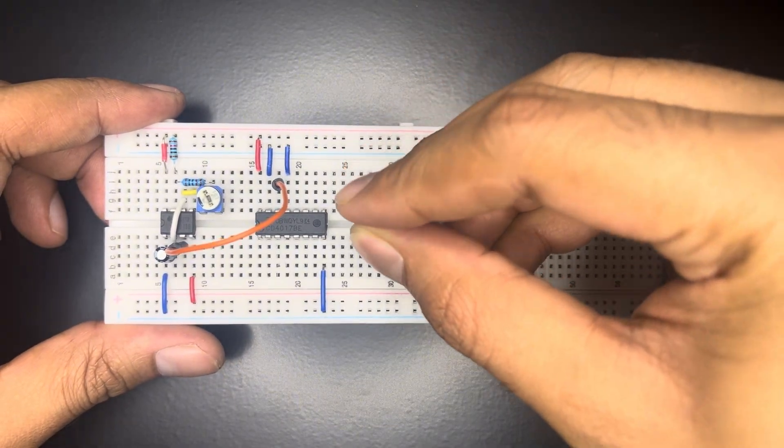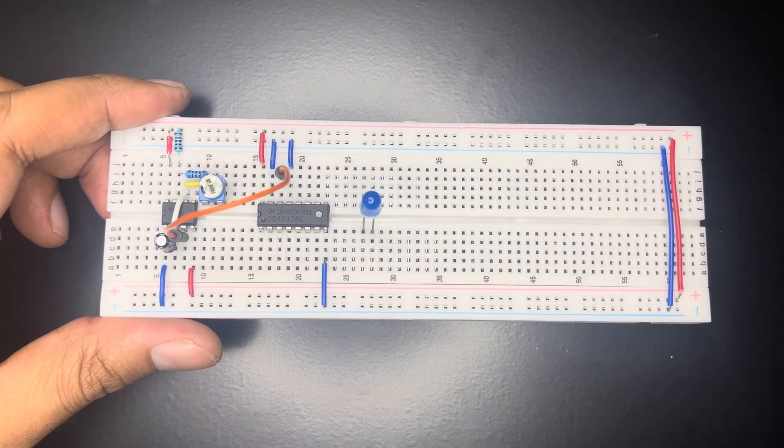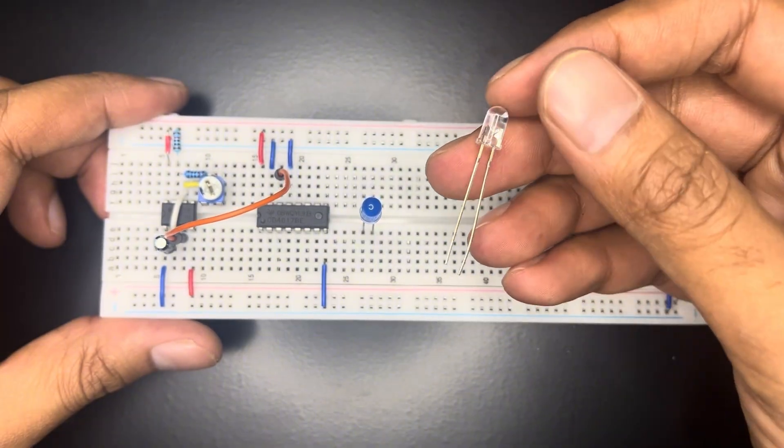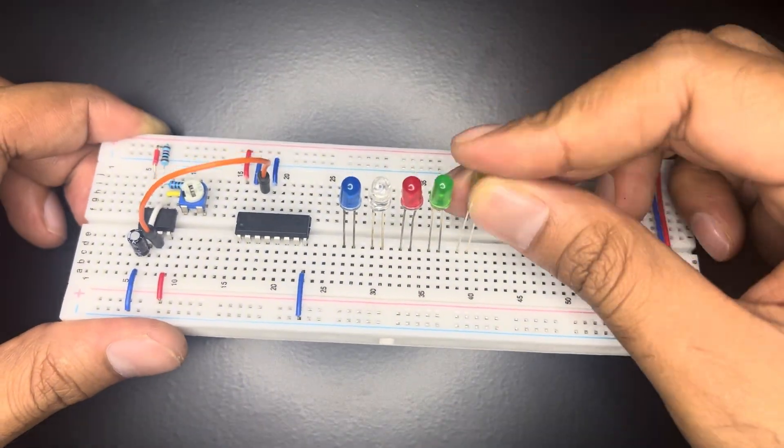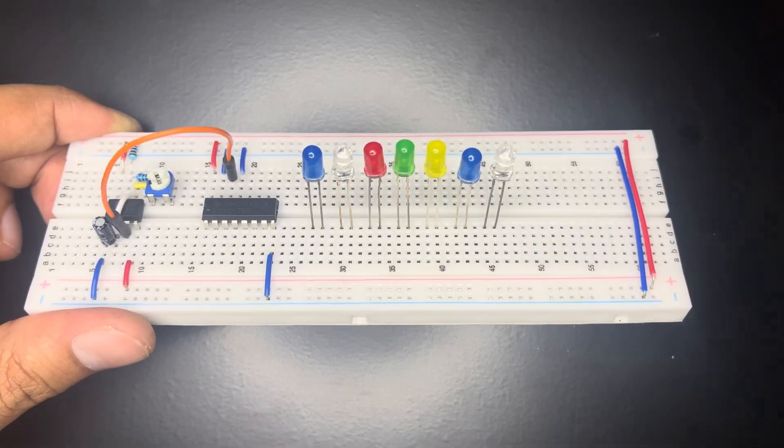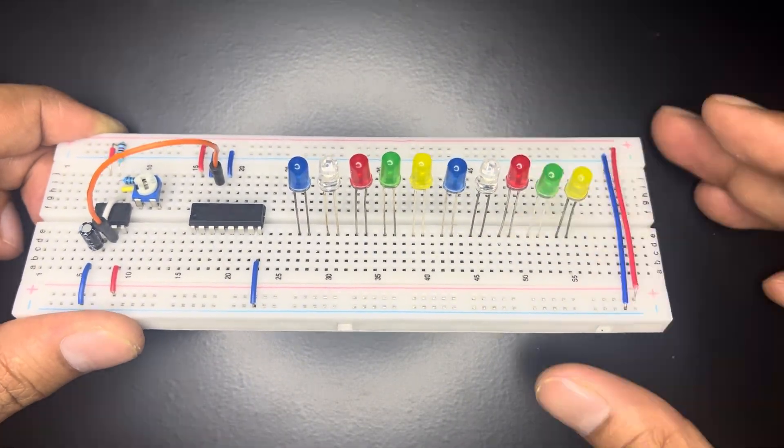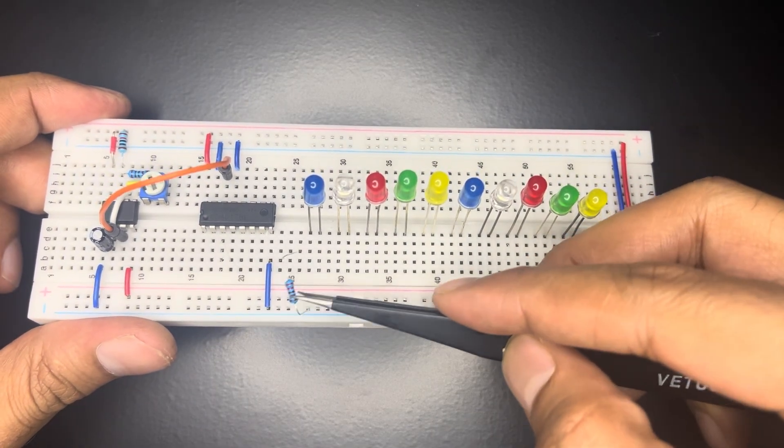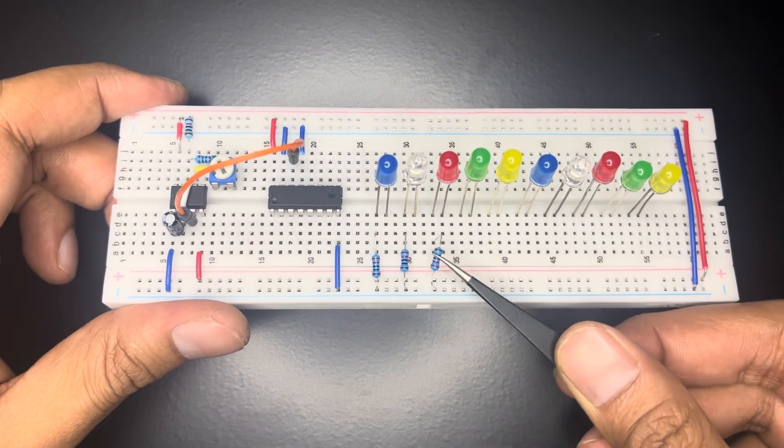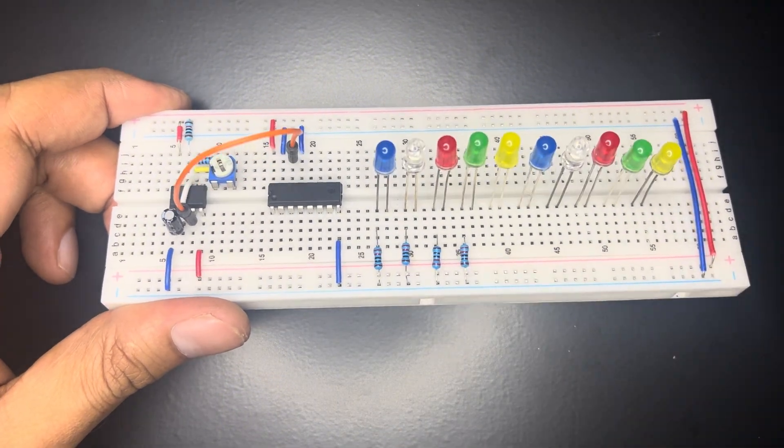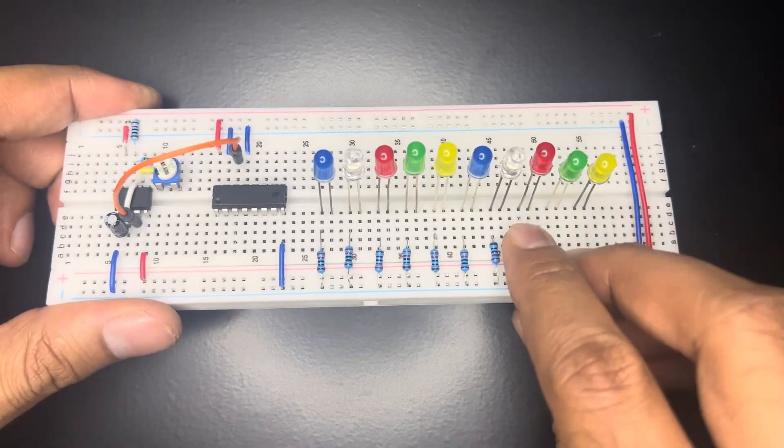Now place 10 pieces of LEDs onto the breadboard in the same sequence of polarity. Here I keep cathode terminal on the left. Connect all the cathode terminals of the LEDs to the ground through a 220 ohm resistor. The resistor will limit the current and protect the LEDs.